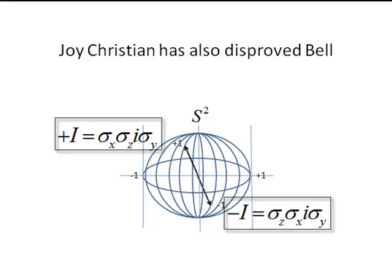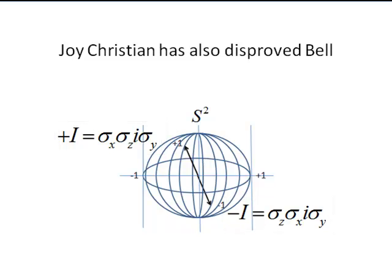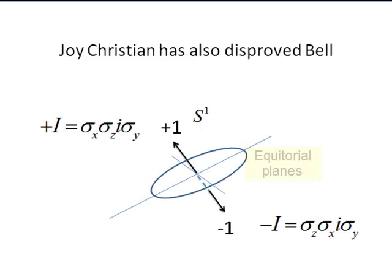The double-valued identity operator points in all directions over the unit two-sphere, so it has direction and orientation. Let's remove the sphere to see things a bit more clearly.